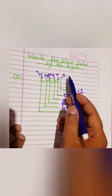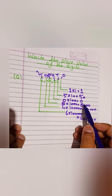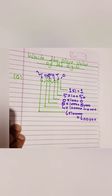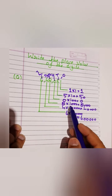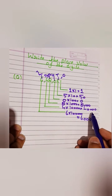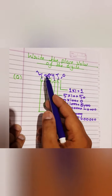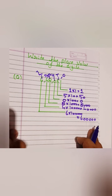Recap: One ones में था — place value one. Five tens में था — यानि की fifty. Zero hundreds में था — zero की place value zero होगी. Eight thousands में था — eight की place value eight thousand. Four ten thousands में था — four की place value forty thousand. Six lakh में था — six की place value six lakh. Clear.